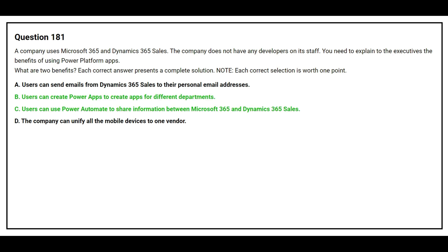The correct answers are Option B: Users can create Power Apps to create apps for different departments, and Option C: Users can use Power Automate to share information between Microsoft 365 and Dynamics 365 Sales.